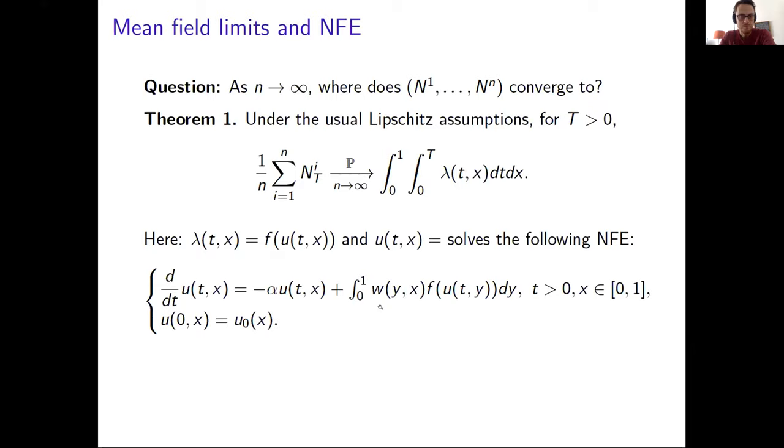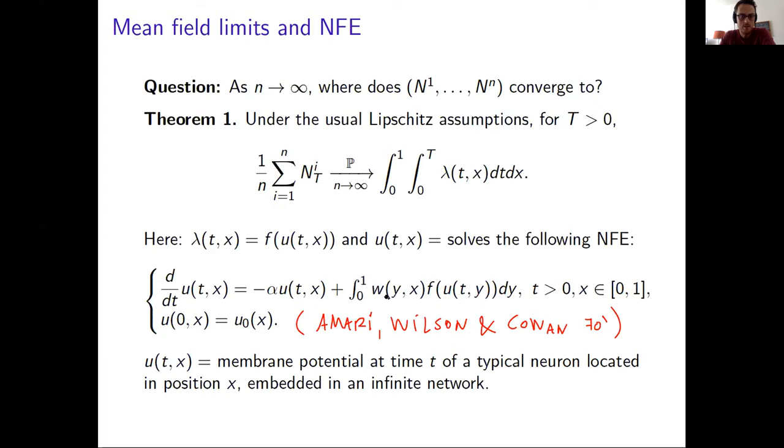So in a nutshell, this equation is just describing the macroscopic behavior of the point process that I just defined. You see here there is this minus alpha u(t), it's this exponential decay. And then there is this nonlinear term here telling me that continuously, the neuron is receiving spikes from the others. So this would represent the fraction of neurons spiking at time t at position y. And then whenever it spikes, it gives W of y to x, and I'm integrating this over all possible positions. And in this sense, u_i(t) can be understood as the membrane potential at time t of a typical neuron located in position x embedded in an infinite network of neurons.